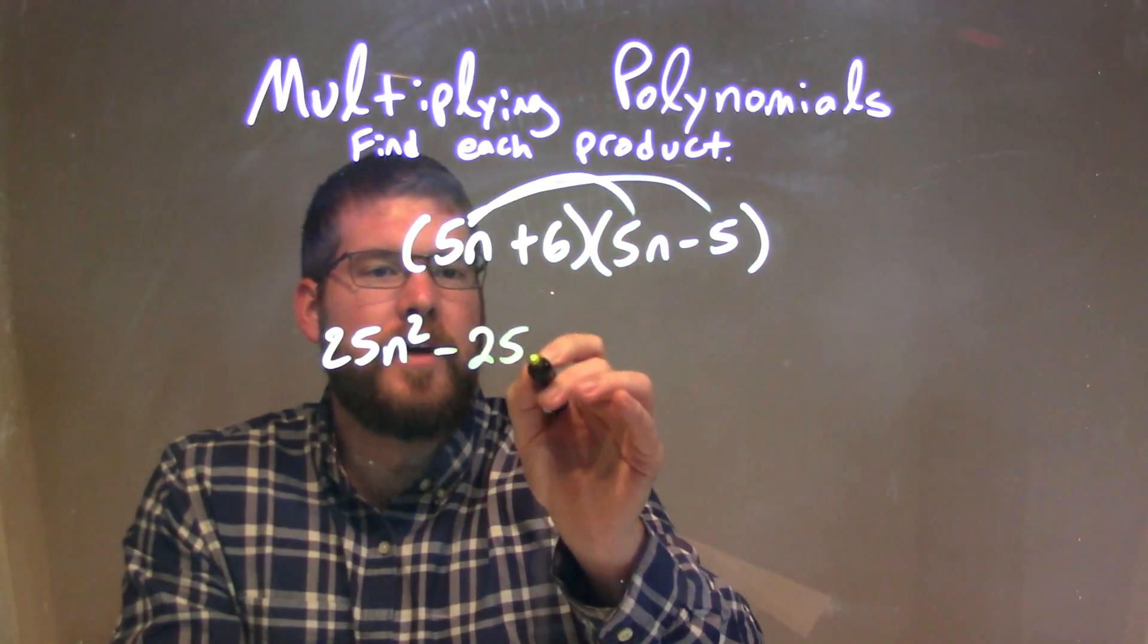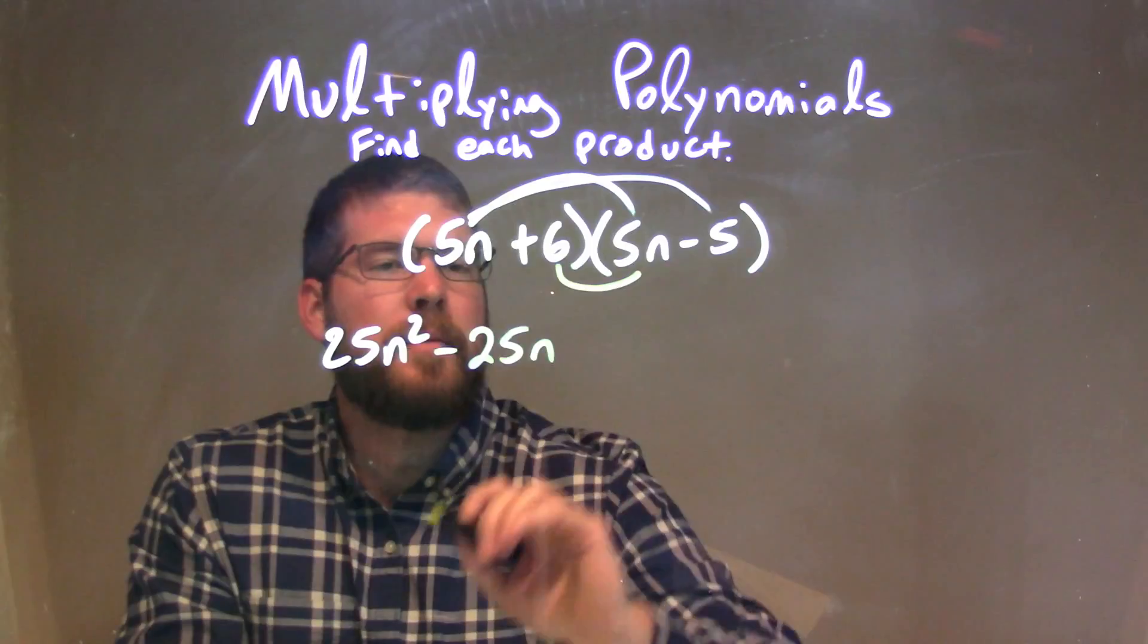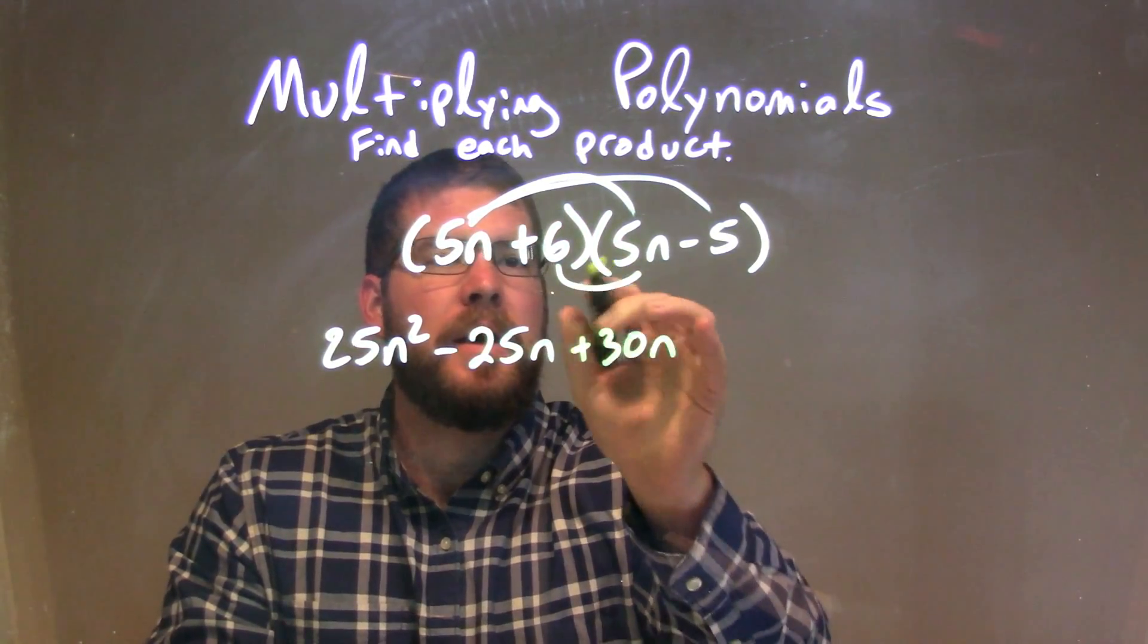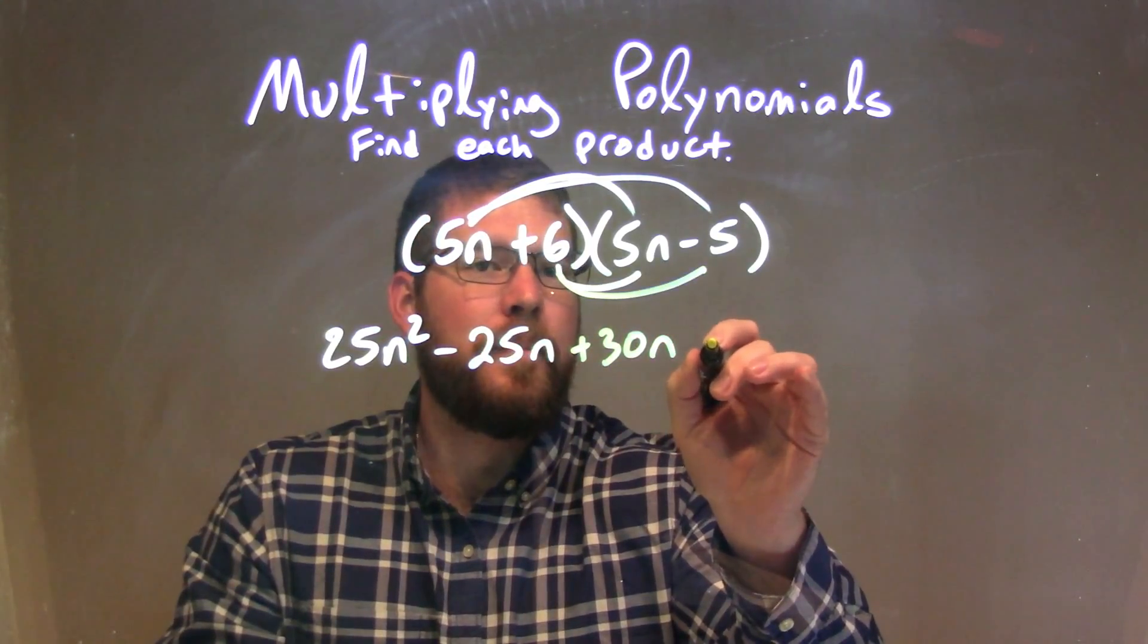6 times 5n, now we're working on the 6, 6 times 5n is plus 30n. And 6 times minus 5 is minus 30.